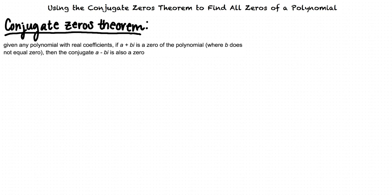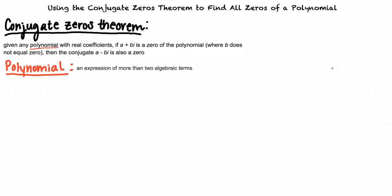To better understand this theorem, let's define a couple of terms and work through an example problem. First, let's define polynomial. A polynomial is an expression of more than two algebraic terms — for example, 2x squared plus 3x plus 4.